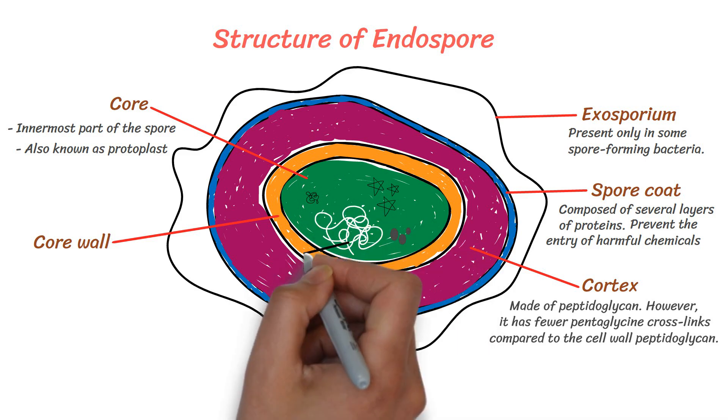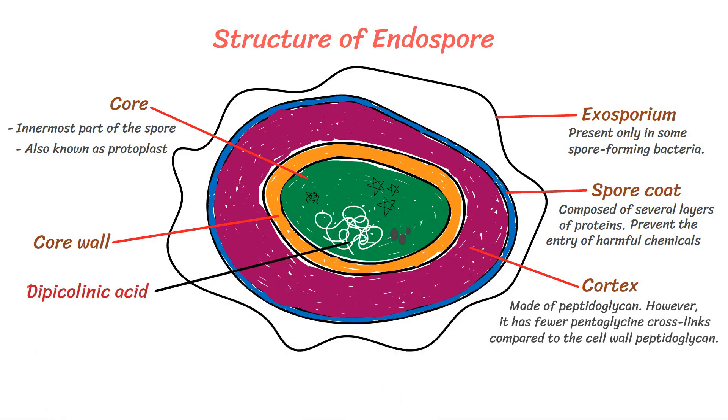The core also contains dipicolinic acid, about 15% of the dry weight of the spore. The actual function of dipicolinic acid is not completely known. However, it is believed that dipicolinic acid forms a complex with calcium ions and helps in removing the water molecules from the spore, causing dehydration of the spore.